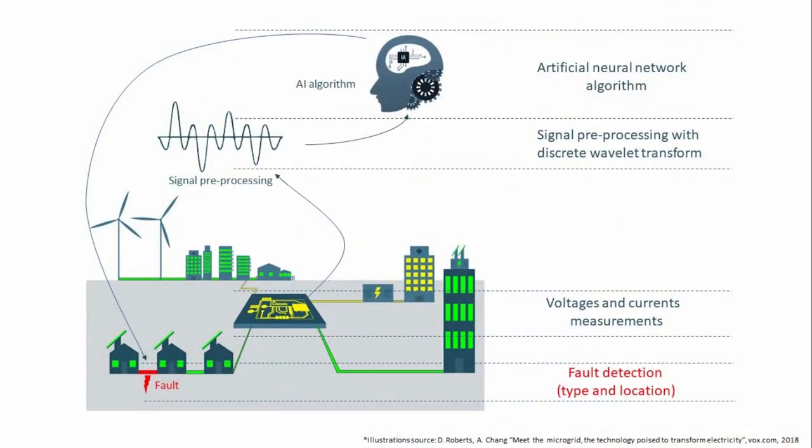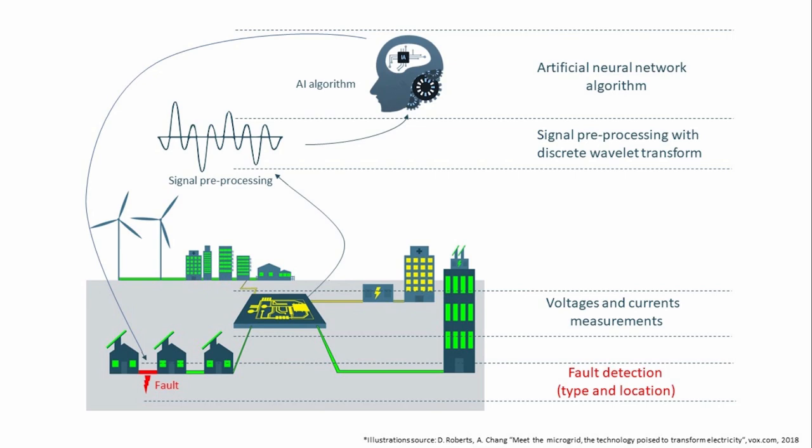And this is the topic of my thesis. Protection of microgrids that can work in both grid-connected and islanded mode is challenging, primarily due to the unpredictable and dynamic behavior of the microgrid. However, by looking at the voltage and current waveforms, valuable information about the system behavior can be extracted. Therefore, by using different pre-processing techniques — where discrete wavelet transform proved to be a promising one — I created a so-called signature signal that describes different events in the system.